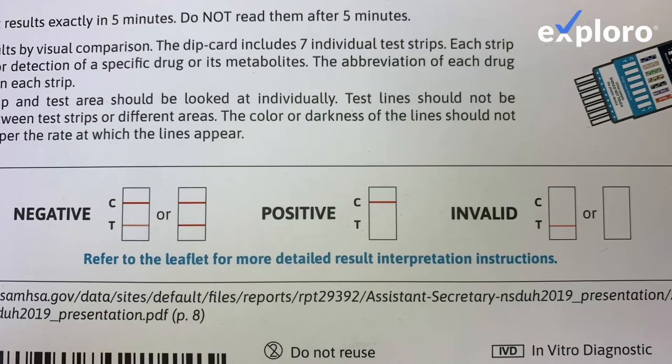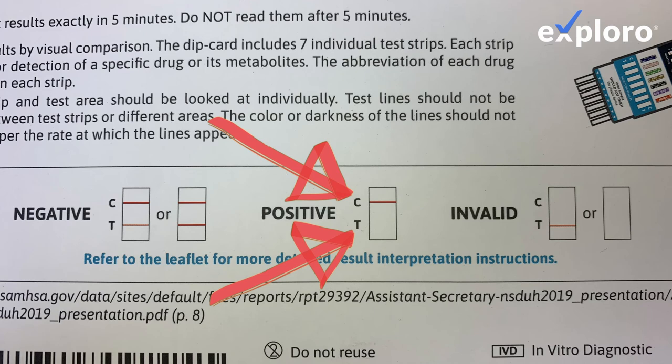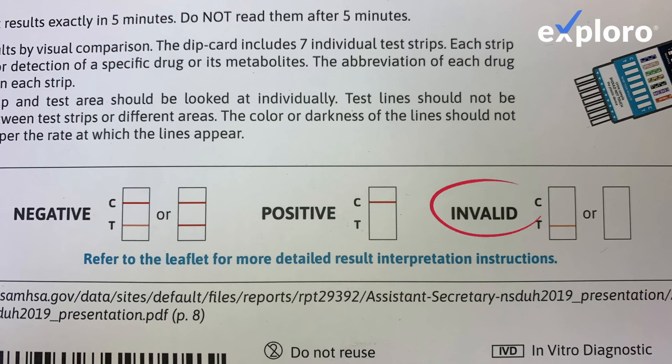So to interpret the results, you're going to be looking at two specific fields: the control field indicated as C, and the test field indicated as T. And there are really three possible results. Number one is you did not perform the test correctly, and there is no line in the control field. This is an invalid test.